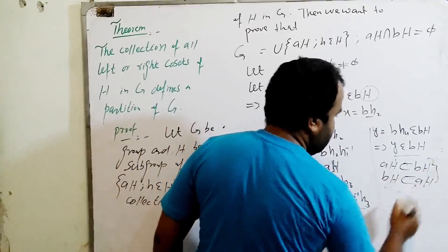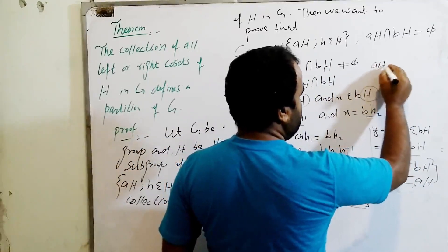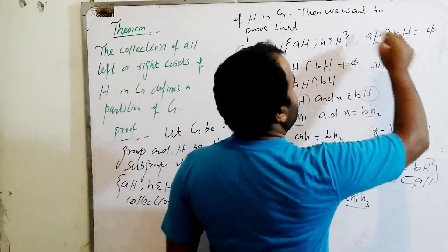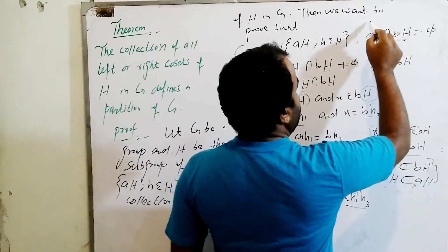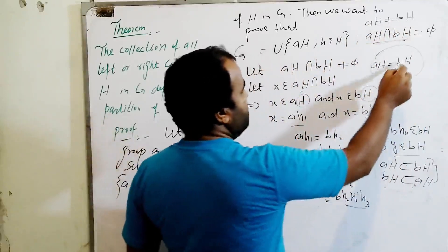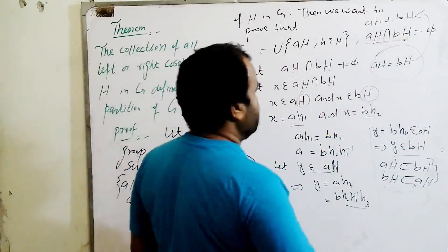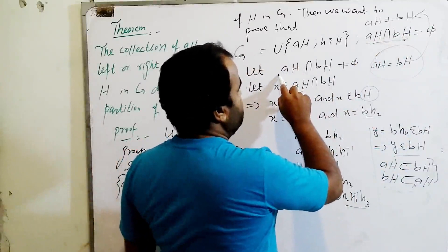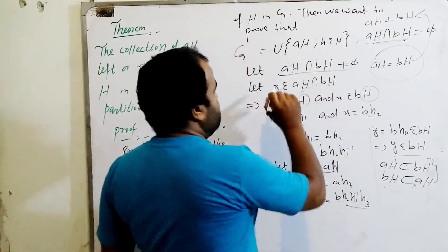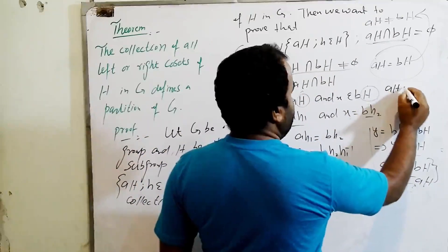From these two results, AH equals BH. But we also supposed that AH is different from BH, so this result contradicts our supposition. Therefore our contradiction is wrong. Our supposition was that AH intersection BH is non-empty — that supposition is false. So the true result is that AH intersection BH is empty.